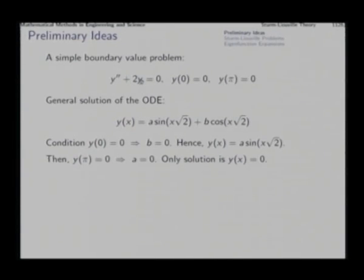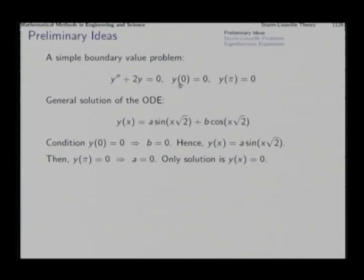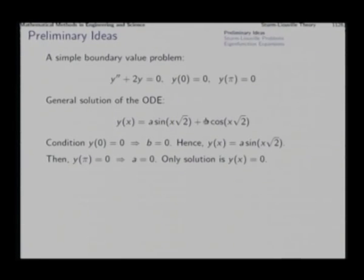Up to this point it is fine. Then we try to apply the boundary conditions to determine the values of a and b. As we force the condition at x equal to 0 (y is 0), this term will vanish. We find b cos 0 is 0, and since cos 0 is 1, b equals 0. From the first condition we find b equal to 0.